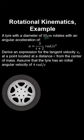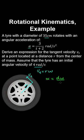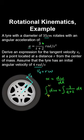A tyre of diameter 35 cm rotates with an angular acceleration that depends on time. Derive an expression for the tangential velocity at a point at distance r from the centre of mass. Since V_t = r omega and the initial angular velocity is 4 rad/s, we use the differential equation relating angular velocity to angular acceleration. Substituting for angular acceleration, separating variables, and integrating from the initial to the current state gives omega as a function of time, which we multiply by r to obtain the tangential velocity.